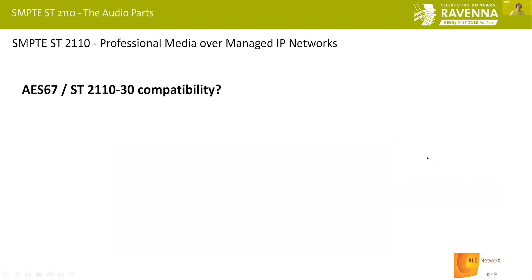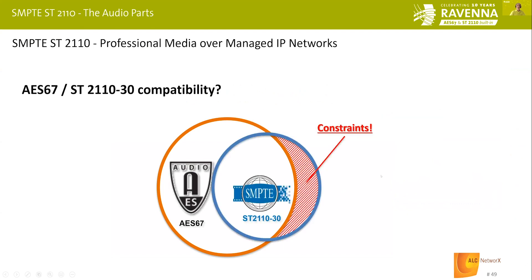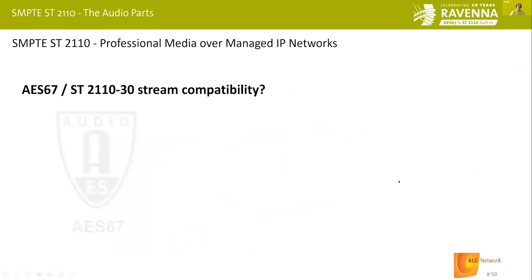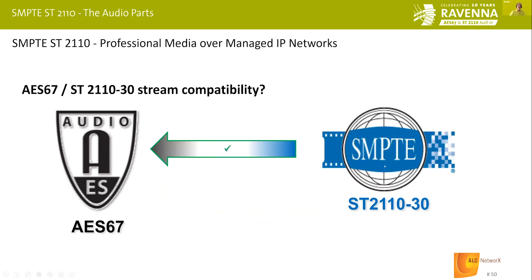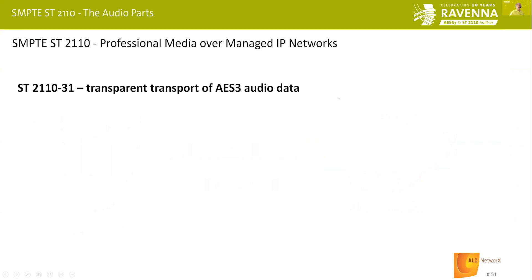To summarize: AES67 mandatory requirements cover 2110-30 Level A. Through AES67's optional recommendations, Level B is also covered, besides the constraints mentioned. Every dash 30 stream is fully receivable by an AES67 receiver. An AES67 sender needs to obey the constraints set by dash 30 — primarily generating streams with a media clock offset of zero. Today, no known AES67 device cannot set the random offset to zero on stream creation.